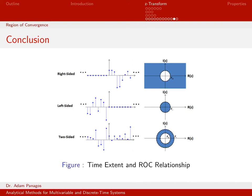We have now rigorously defined how signal characteristics in the time domain impact the region of convergence for infinitely long signals. On the next chart, we'll work through a concrete example with a two-sided signal and figure out what its region of convergence is.